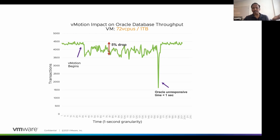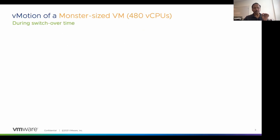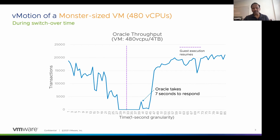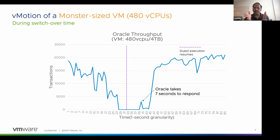But what happens when we increase the VM by about 7x — to 480 vCPUs? The performance doesn't look so pretty. Here we're focusing on the switchover time, which is the most challenging aspect of vMotion. During this time, Oracle took nearly seven seconds to respond, even after the VM was powered on at the destination host — shown by the purple bar. In the previous slide it took less than half a second, but here it takes seven seconds for Oracle to respond.